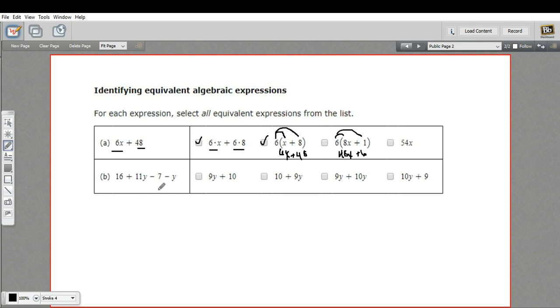Now, in part B here, we have to do some combining of like terms to start with. We have two sets of like terms. We have 11y and negative y. And when you see a negative y or a negative x or a negative variable without a number, in your head, you should think 1. Again, this is 1y.